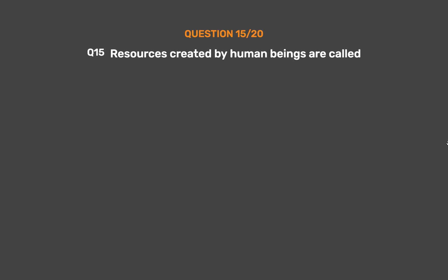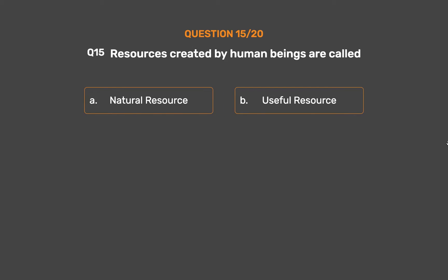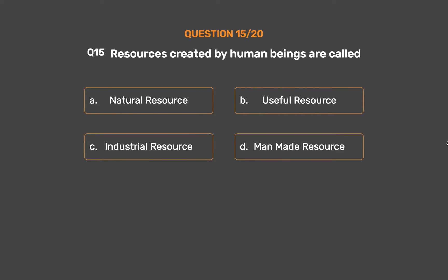Question number 15. Resources created by human beings are called: Option A: Natural resource. Option B: Useful resource. Option C: Industrial resource. Option D: Manmade resource.